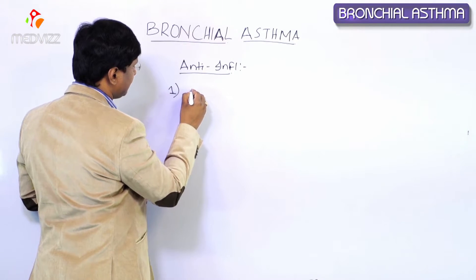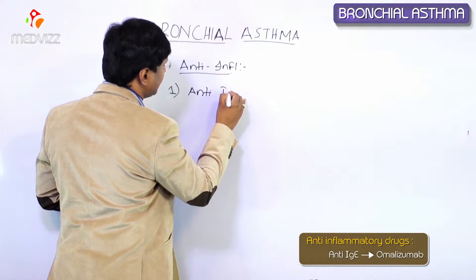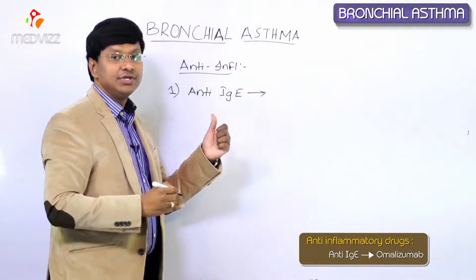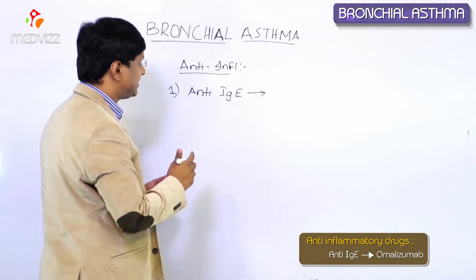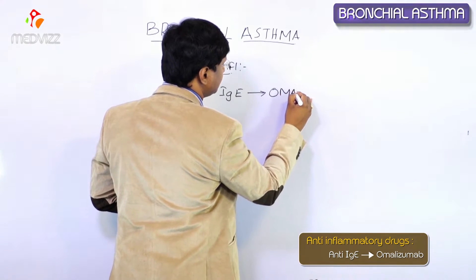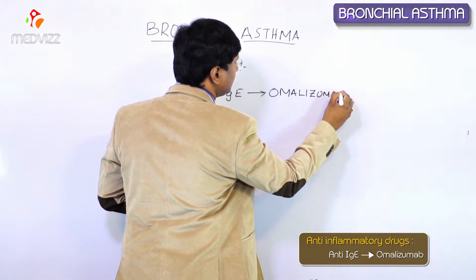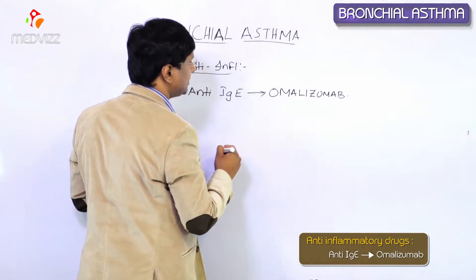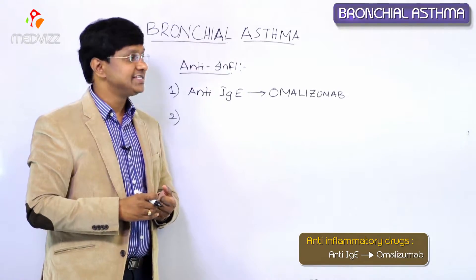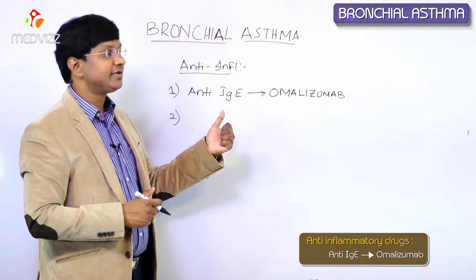We have a group of drugs considered as anti-IgE. The drug in this category is omalizumab. This is the anti-IgE drug which is useful as an anti-inflammatory drug in the treatment of bronchial asthma.